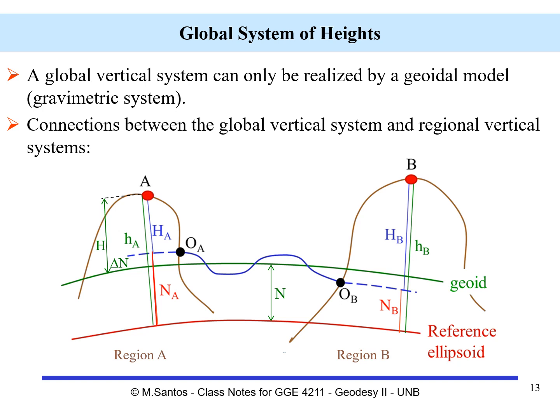That global height system would then be used to establish connections with respect to regional vertical systems. In this figure, let's consider we have two continents — region A and region B. The vertical systems of these regions have at their datum the tide gauges at point A and point B, O sub A and O sub B, with the ocean between them, and each side has its own system of heights.